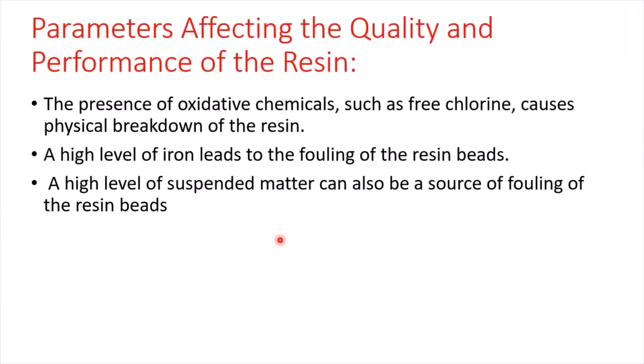There are some parameters that can affect the quality and performance of the resin. First, the presence of oxidative chemicals like free chlorine can cause the physical breakdown of the resin. If our water contains chlorine, we have to pre-treat it using a carbon filter, which can remove the chlorine. Also, a high level of iron can lead to fouling of the resin beads, and in this case we have to pre-treat the water using an adequate method.